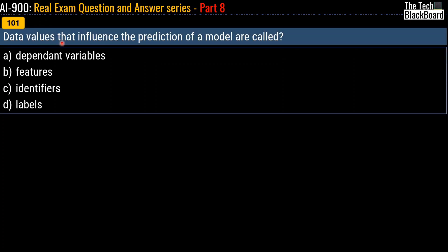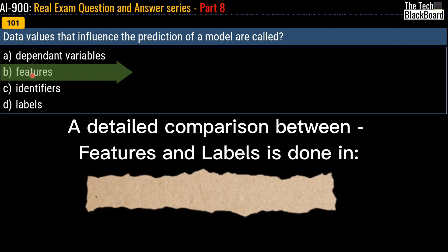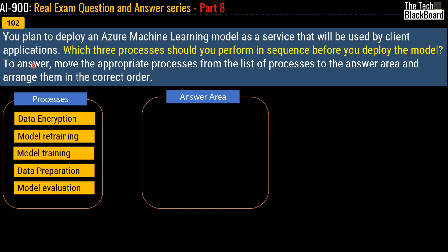Question 101: Data values that influence the prediction of a model are called what? Your options are: dependent variables, features, identifiers, or labels. The correct answer is option B — features. If you want to understand in detail what features and labels are, watch question number 51 of Part 5, where I explained in detail how to distinguish between them.